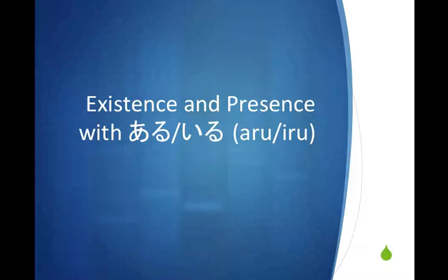We're going to be talking about things like 'there is something over there' or 'I have something.' Arimasu is like the verb 'to have' in English. We'll be talking about things that exist, people that are in certain places, and so on.